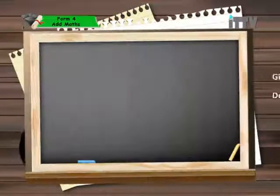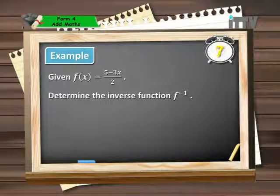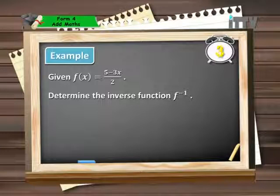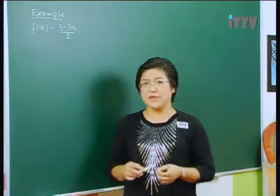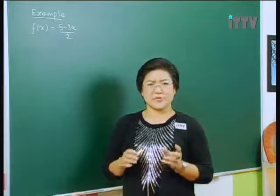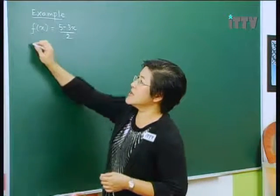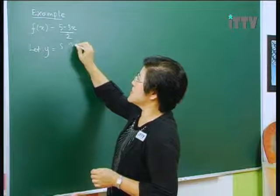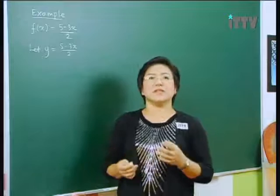Let's look at the next example and do it on the board together. Given that f(x) equals (5 minus 3x) over 2, determine the inverse function f⁻¹. The function f(x) equals (5 minus 3x) over 2, and we're trying to find the inverse function for this. Since f(x) is a symbol that's rather bulky to use, let's change it into the letter y. So we say: let y equal (5 minus 3x) over 2.